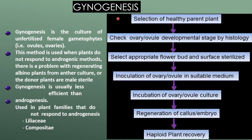Gynogenesis is the culture of unfertilized female gametophyte, that is ovule or ovary. This method is used in plants that do not respond to androgenic methods, where there is a problem with regenerating albino plants from anther culture, or the donor plants are male sterile. Gynogenesis is less efficient than androgenesis and is used in plant families such as Liliaceae and Compositae. The protocol involves selecting a healthy parent plant, checking ovary or ovule developmental stage by histology, selecting and sterilizing appropriate flower buds, inoculating ovary or ovule in suitable medium, and incubating for regeneration of callus or embryo, then haploid plant recovery.